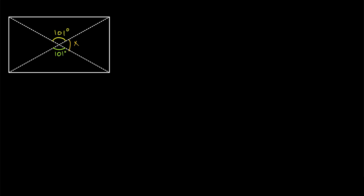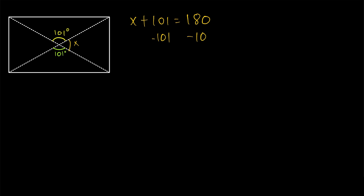If we call this angle x, since it's supplementary with the angle that has a measure of 101 degrees, we have that x plus 101 is equal to 180. Together, they form a straight angle — a line. Subtracting 101 from both sides, we have that x is equal to 79 degrees. And then again, by vertical angles, this angle on the other side has that same measure, 79 degrees.